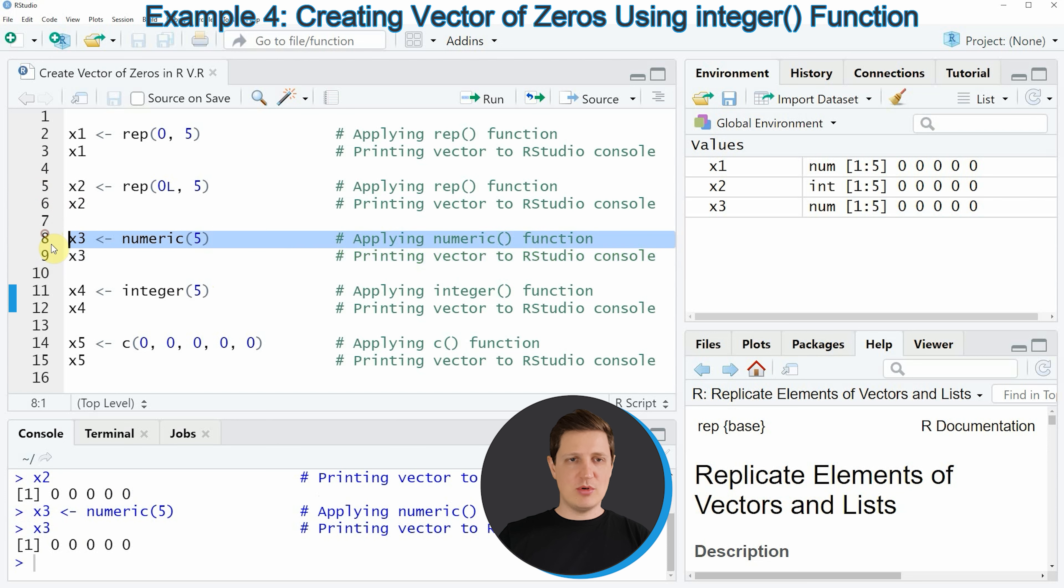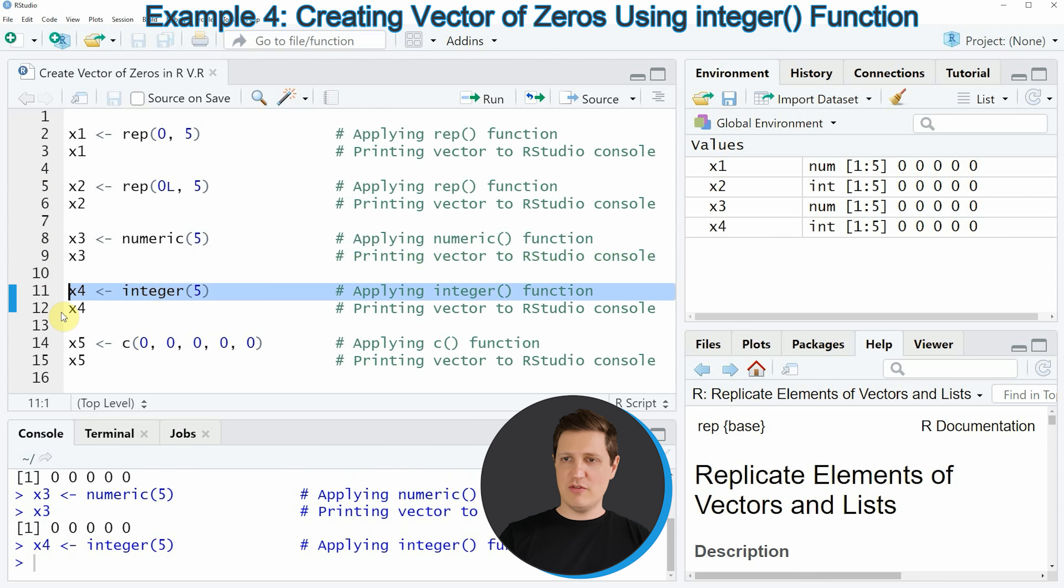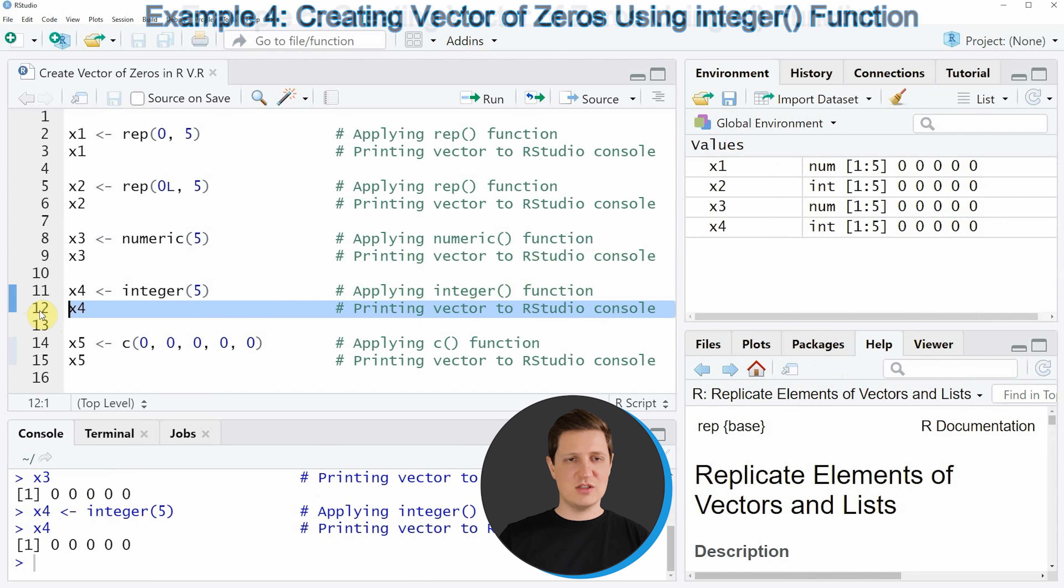Similar to example 3 we can also use the integer function as you can see in line 11 of the code. If you run line 11 of the code another vector consisting of five zeros is created.